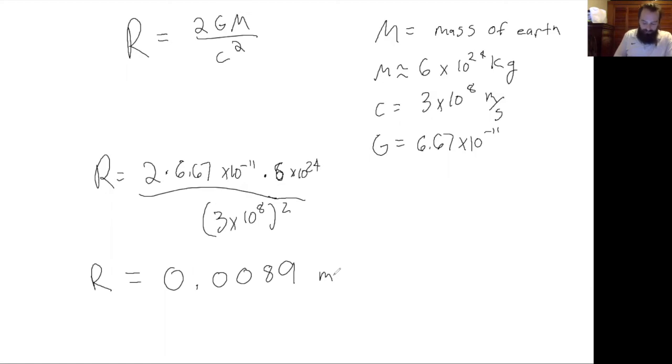So if the earth suddenly turned into a black hole, or in order for the earth to turn into a black hole, it would have to shrink all of its mass down into less than 1 centimeter. So it would be very very small.